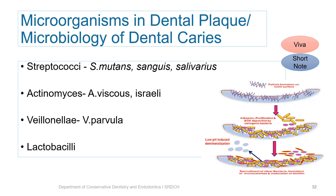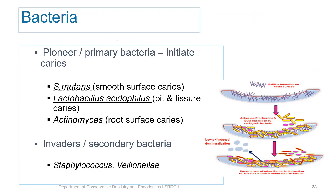The microbiology of dental caries is a very important topic. Four key microorganisms must be mentioned: streptococci — the prominent species being Streptococcus mutans, sanguis, and salivarius; Actinomyces species, that is Actinomyces viscosus and israelii; Veillonella parvula; and Lactobacilli. Pioneer bacteria are those which initially colonize the tooth surface and are responsible for initiation of caries. Streptococcus mutans is implicated in initiation of smooth surface caries, Lactobacilli in pit and fissure caries, and Actinomyces are suspected to cause root surface caries. Once the caries lesion is initiated, other bacteria colonize the region — these are known as secondary bacteria or invaders, which include staphylococci and Veillonella.